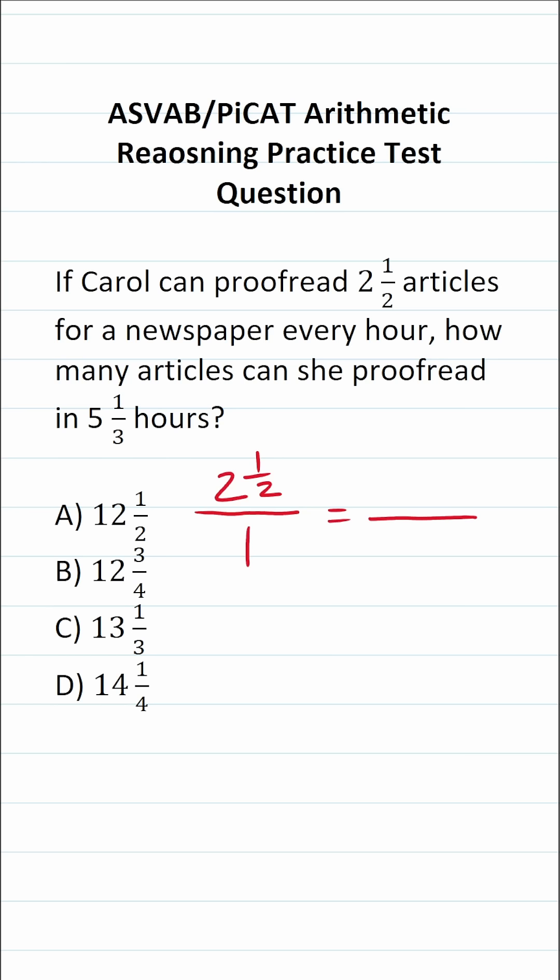And we want to know how many articles—that amount's unknown, so let's call it X—she can proofread every five and one third hours.